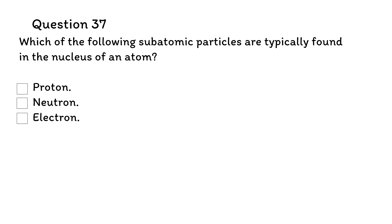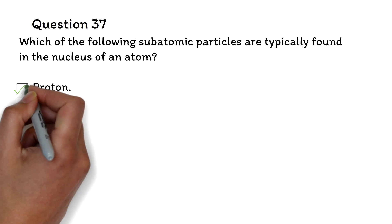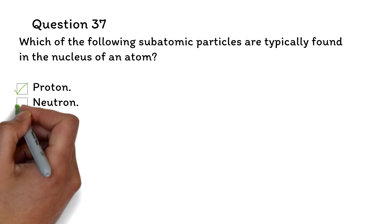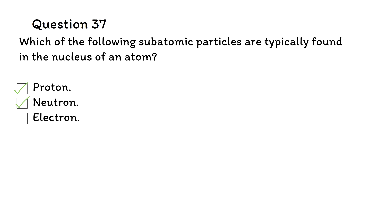Question 37: Which of the following subatomic particles are typically found in the nucleus of an atom? Proton, neutron, or electron? The correct answer is proton and neutron.